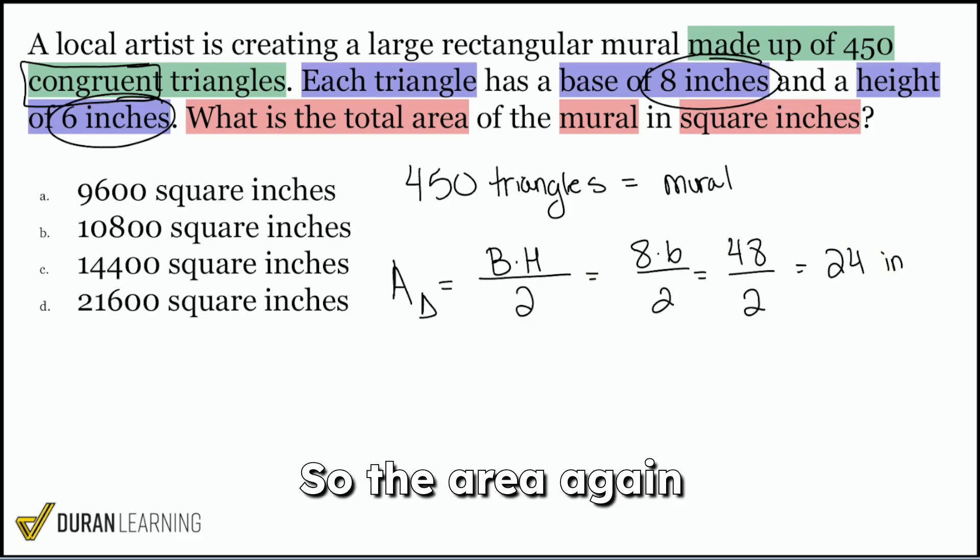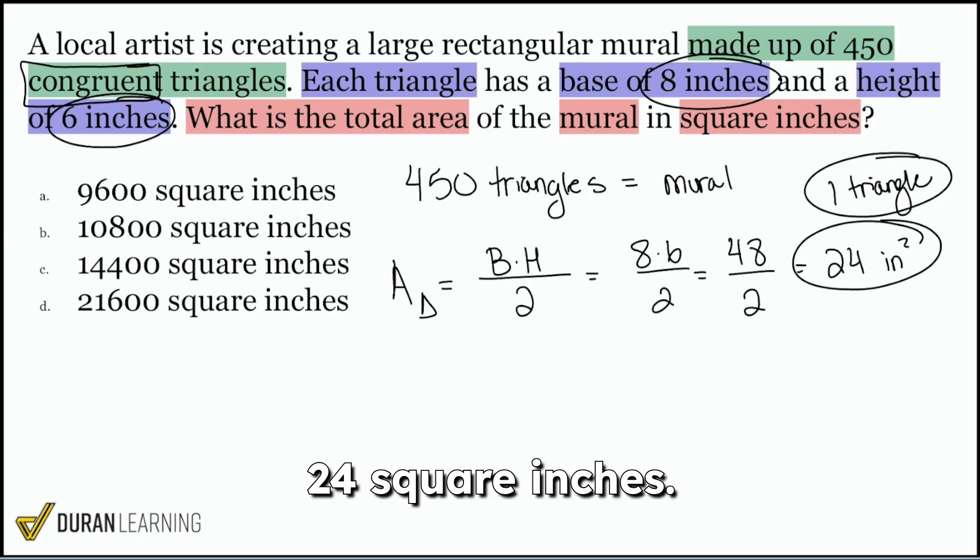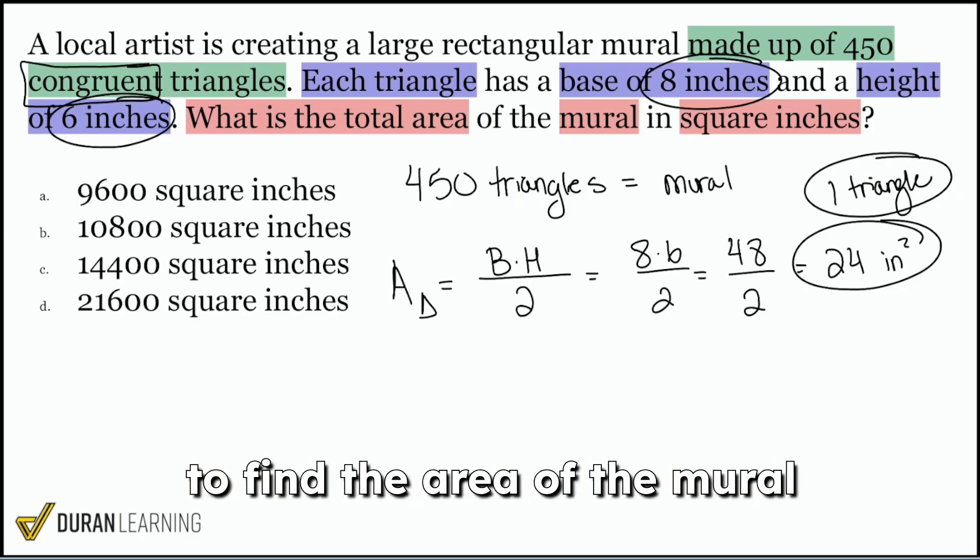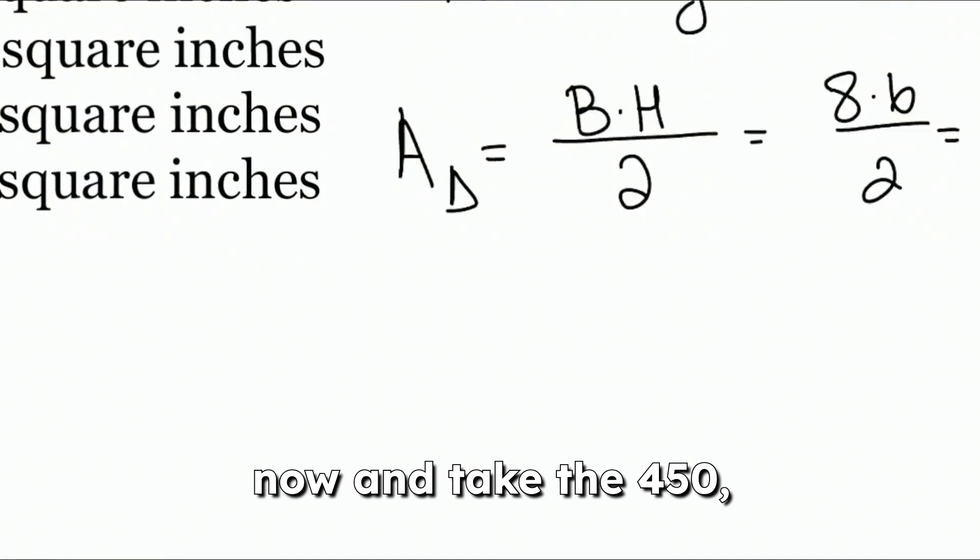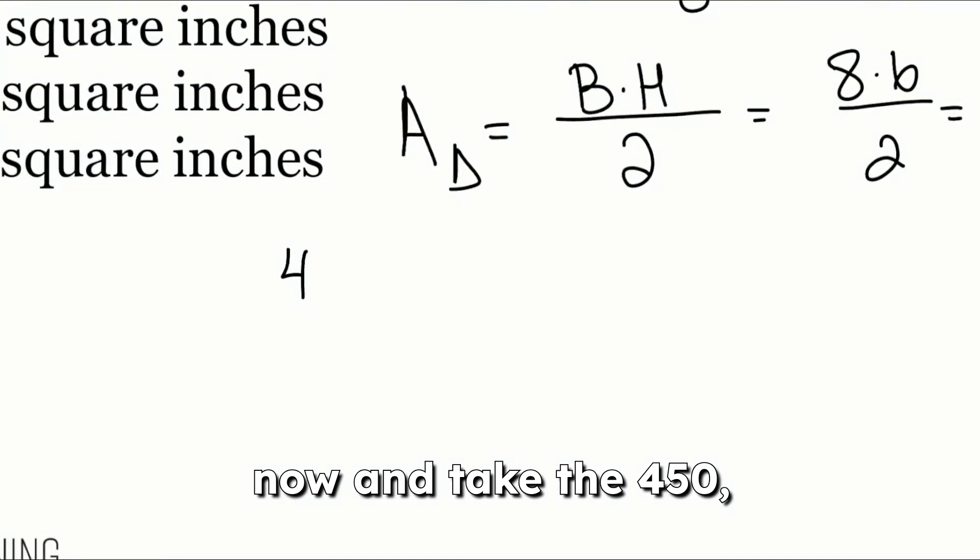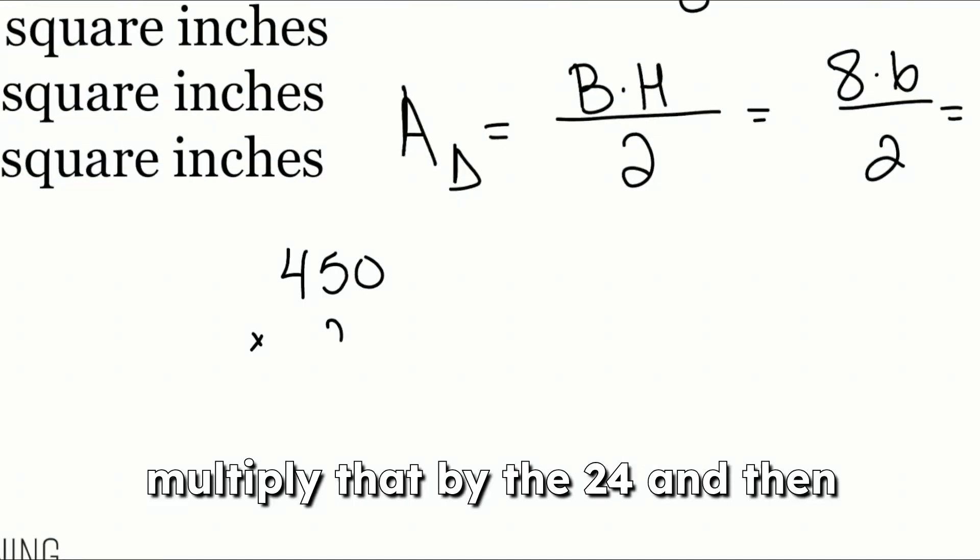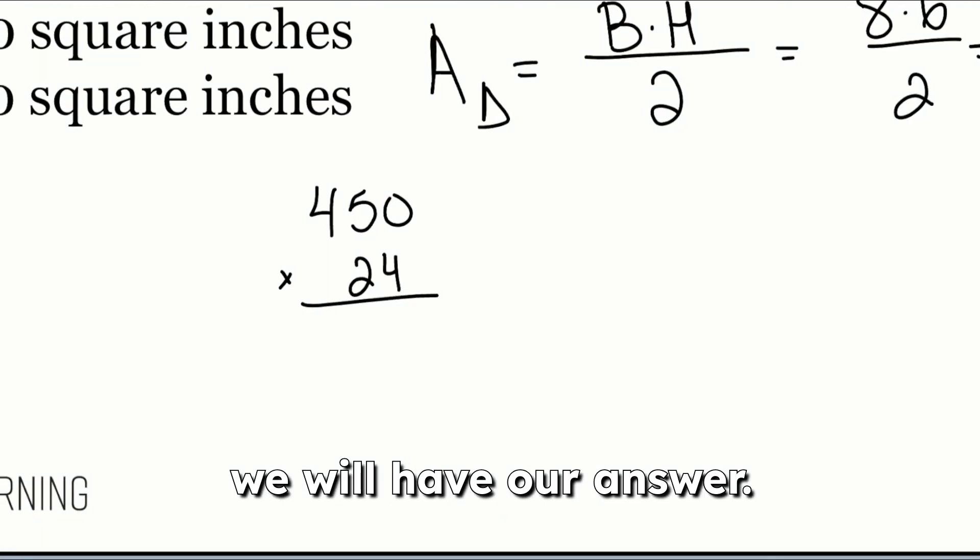So the area, again, of one triangle, of one triangle is 24 square inches. But remember that we're trying to find the area of the mural, and that's going to be 450 triangles. So we need to go ahead now and take the 450, multiply that by the 24, and then we will have our answer.